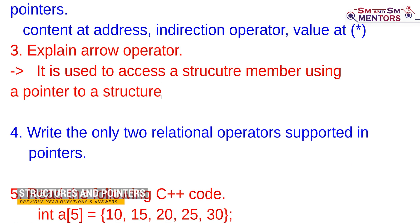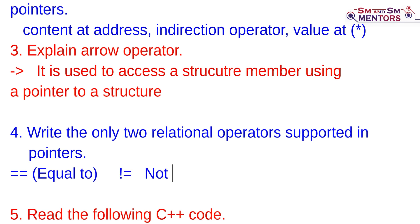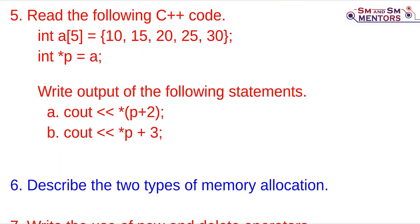Write the only two relational operators supported in pointers. Pointers support two relational operators: equal to (==) and not equal to (!=). Now, write the following C++ code: int a[5] = {10, 15, 20, 25, 35}.